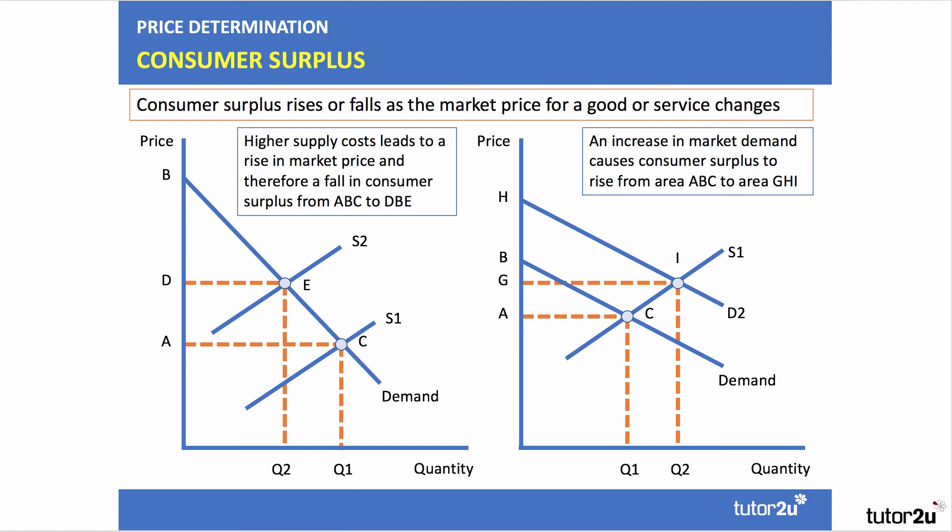On the right-hand side, there's an increase in demand. If there's no shift in supply and demand increases, consumers are willing and able to pay more. The quantity goes up from Q1 to Q2, the price goes up from A to G. But the area of consumer surplus will rise from A, B, C to area G, H, I.